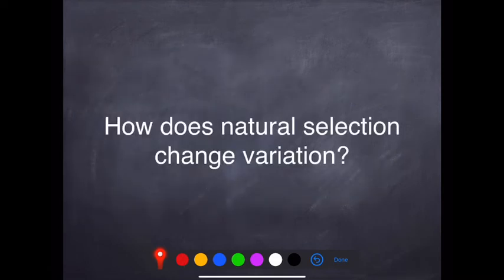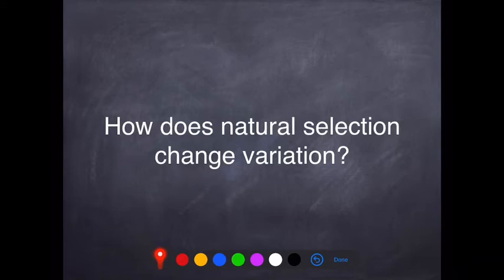Now when we look at natural selection — which we'll cover in the next video — in this video we look at how natural selection changes our variation: how does it act on either continuous or discontinuous data?